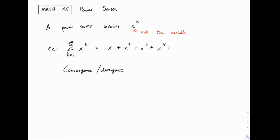But if x equals 1, you would have 1 plus 1 squared plus 1 cubed plus 1 to the fourth — you're just adding 1 to itself infinitely many times, so that diverges. And if x equals 2 and so on, it would still diverge. So the convergence and divergence depends on the value of x.